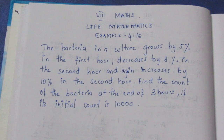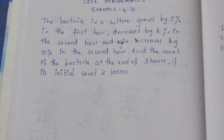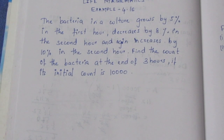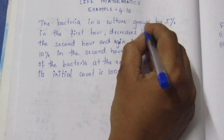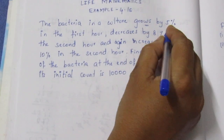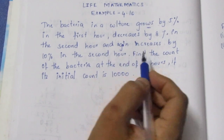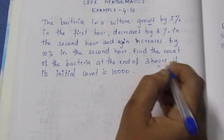let's look at Example 4.16. The bacteria in a culture grows by 5% in the first hour, decreases by 8% in the second hour, and again increases by 10% in the third hour.